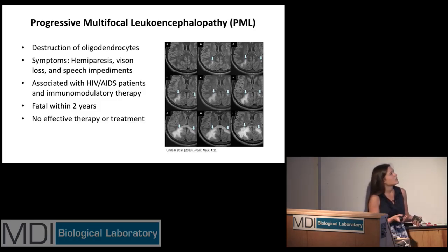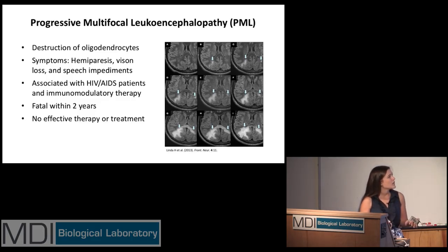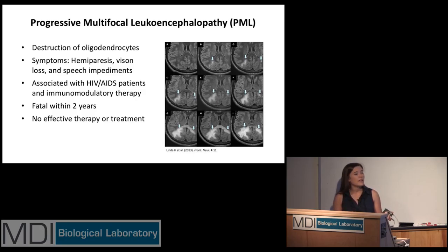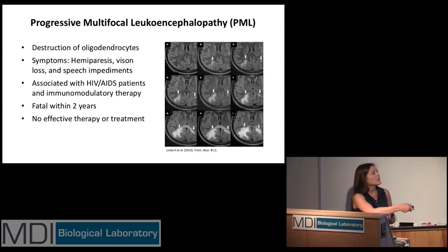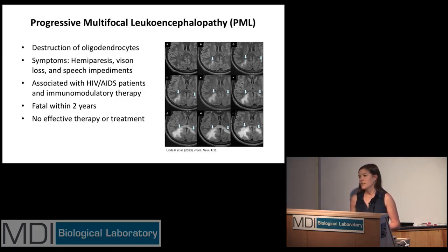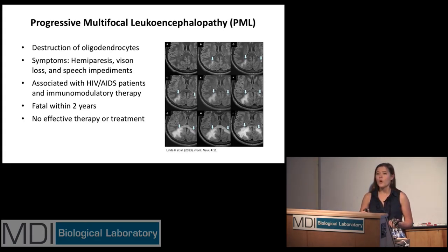Some symptoms of the disease include vision loss, speech impediments, and it can sometimes mimic multiple sclerosis depending on where it forms within the brain. It is highly associated with HIV and AIDS patients, as well as those receiving immunomodulatory therapies — including, sadly, those who actually have MS. The disease proves fatal within two years of symptom onset, with 90% of patients succumbing as close as one year after onset. In the figure on the right you can see MRI scans from pre-diagnosis down to two and a half months after diagnosis, where white areas represent plaque formations from the death of myelin-producing cells. Right now there is no effective therapy or treatment for either PML or this viral infection.